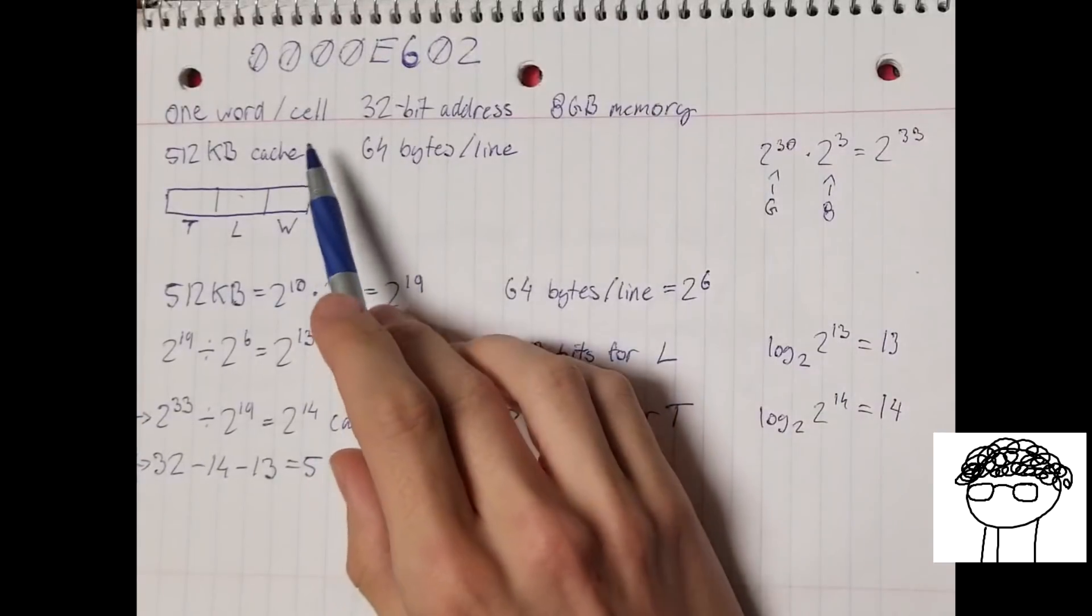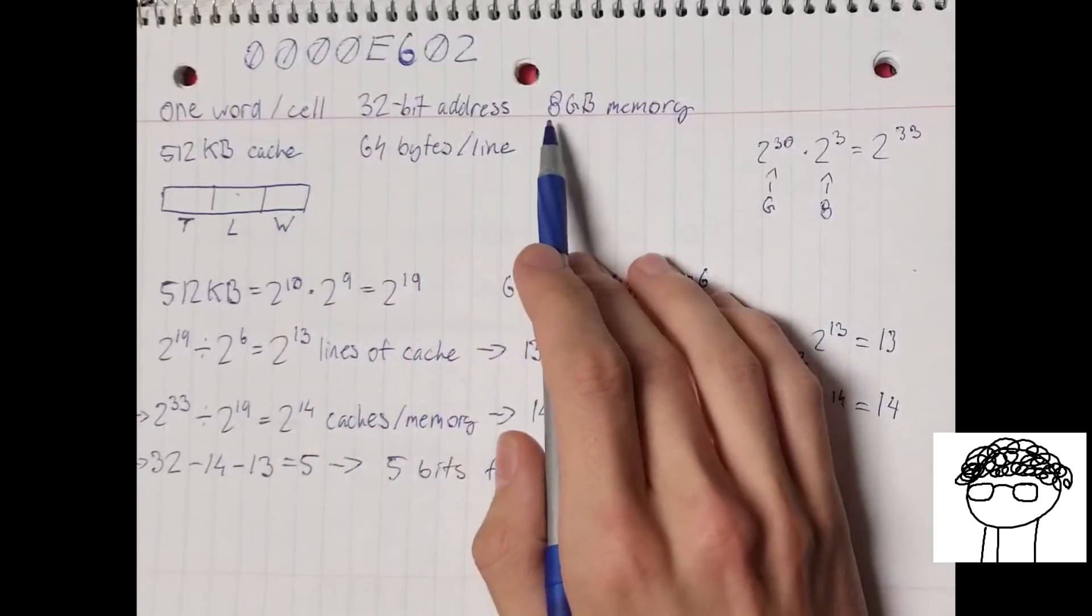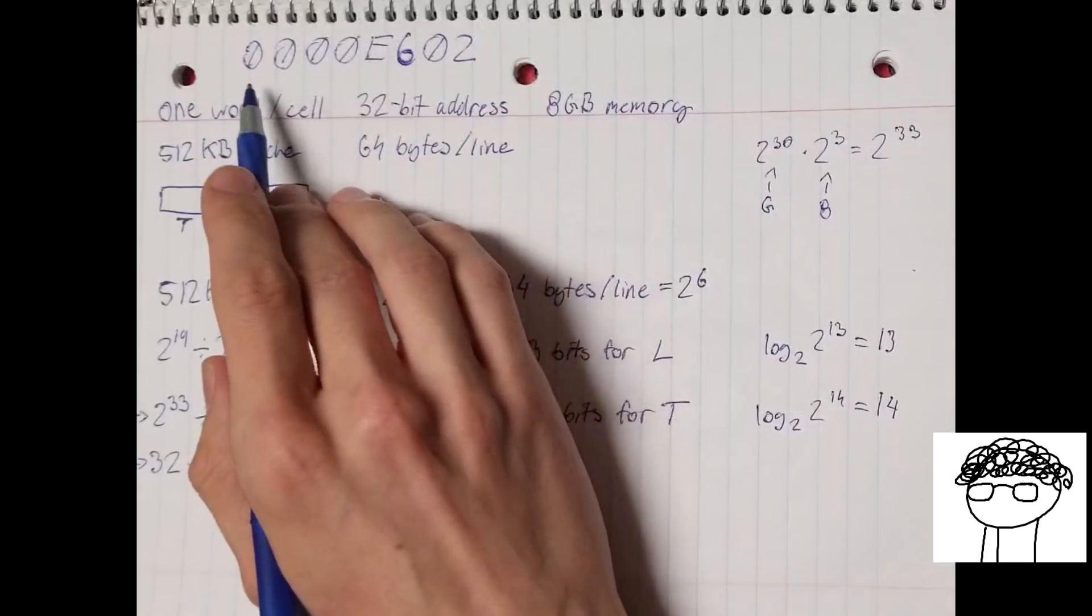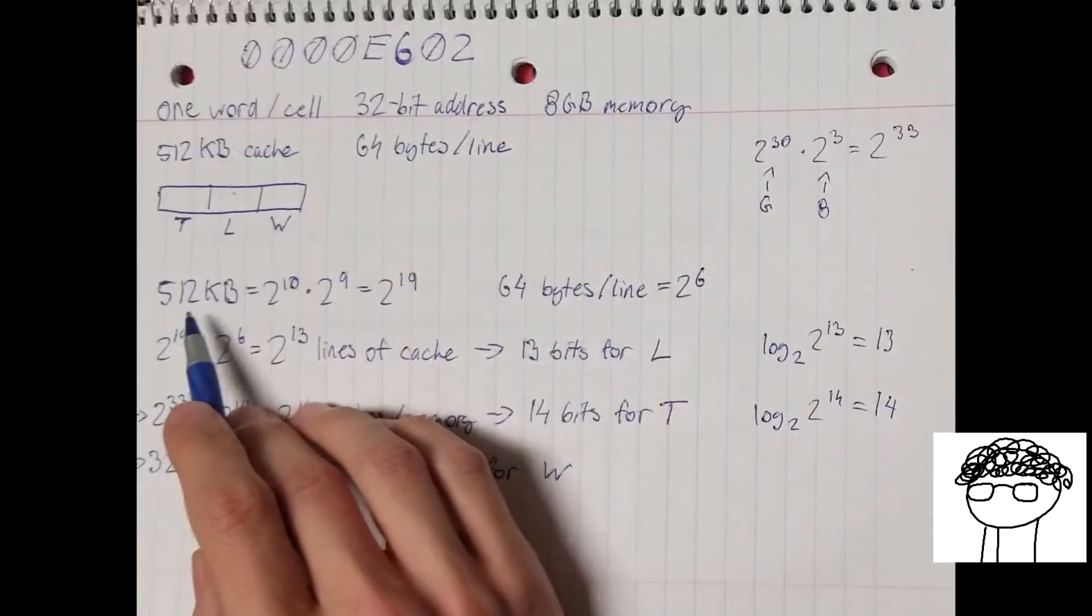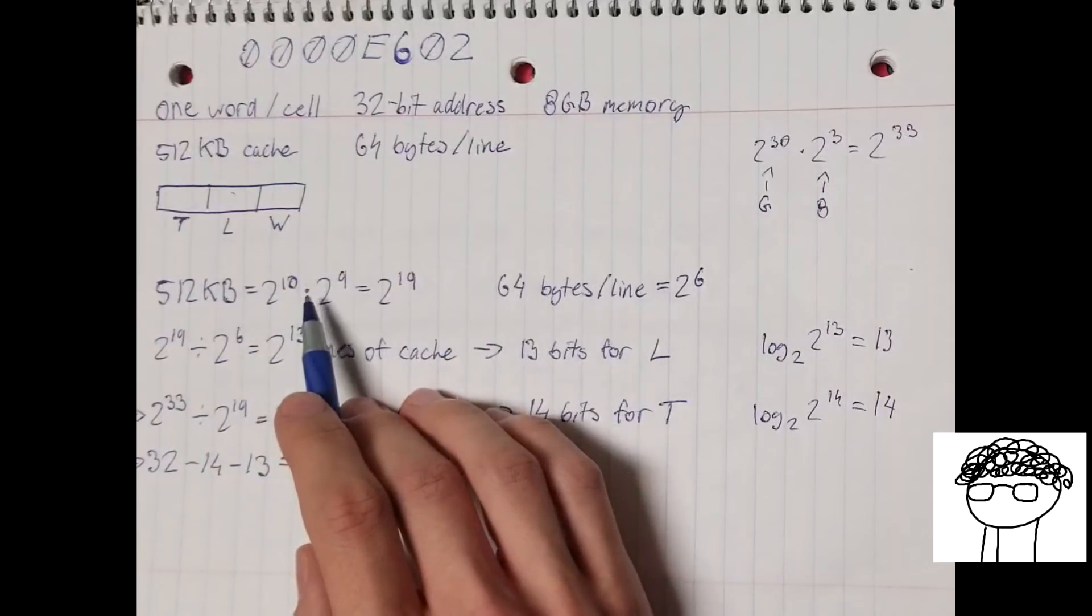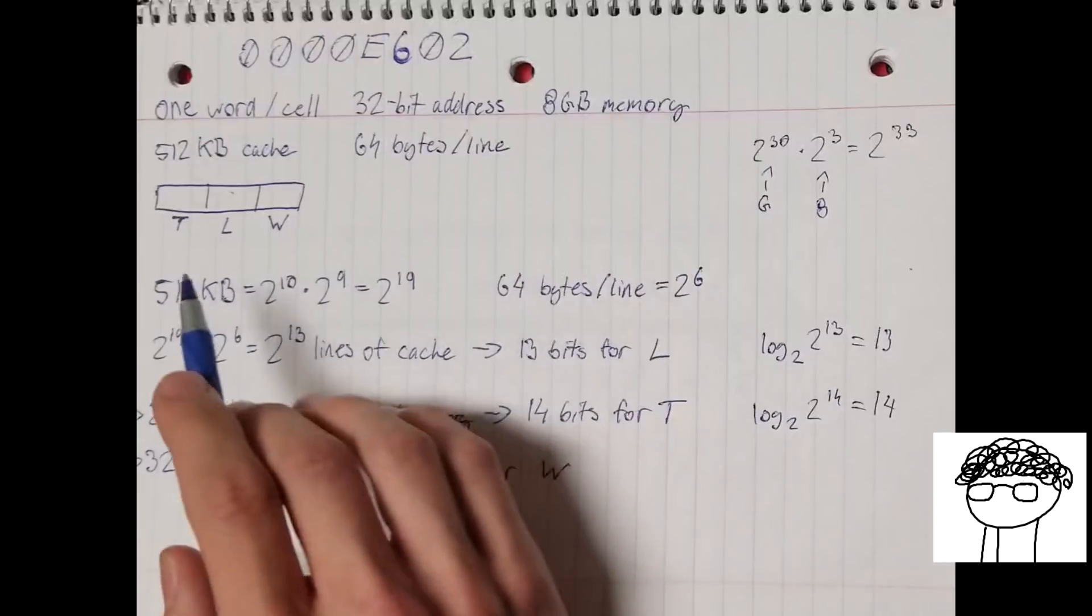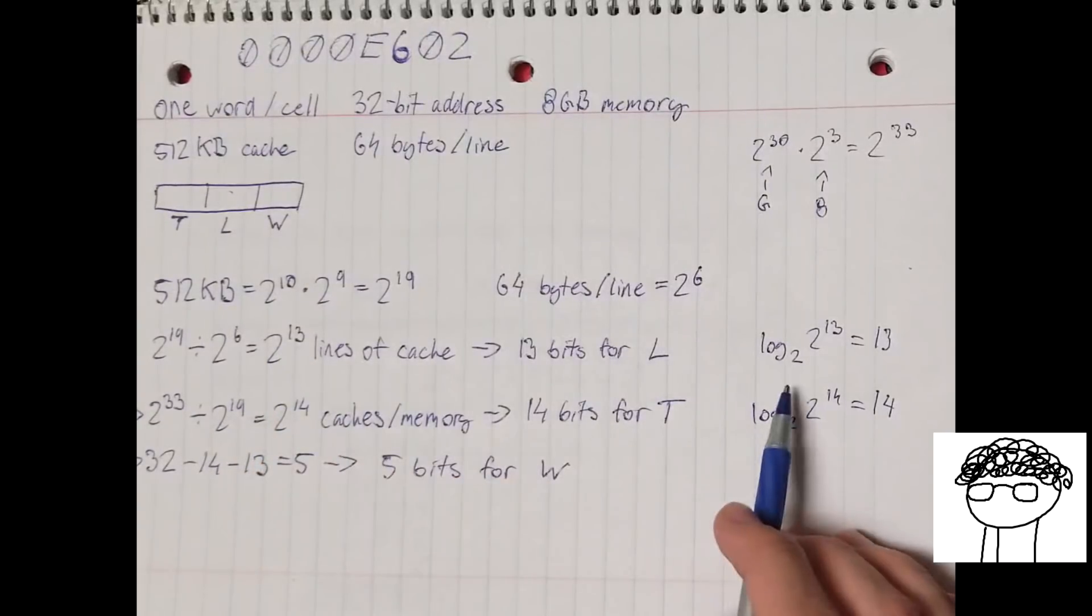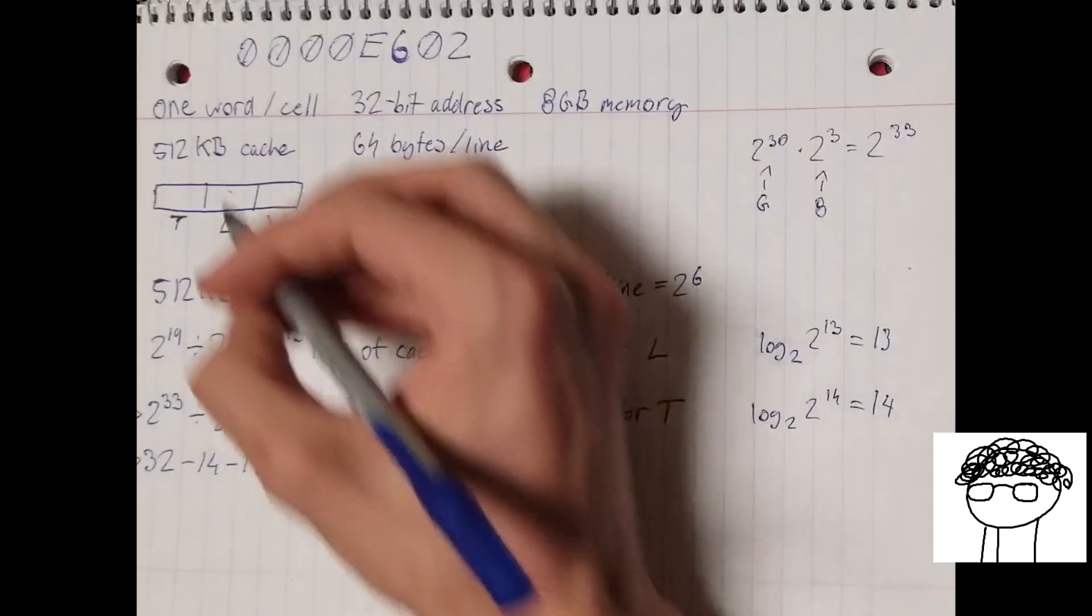Okay, so to start off, we'll look at the information that we have about our memory. We know that we have one word per cell in main memory. Each cell in main memory has a 32-bit address, and in total we have 8 gigabytes. In our cache, we have a total of 512 kilobytes, and there's 64 bytes in a line. So the address we've been given is this hex address here, so we're going to use that to answer a couple of questions. To start off, we're going to convert our total cache size into some base 2 stuff here. That'll make it a bit easier to work with. So 512 kilobytes, that's 2 to the 10 for K, times 2 to the 9 for 512, gives us 2 to the 19 bytes in our cache. The 64 bytes per line becomes 2 to the 6 for 64. I can then use those and divide my total cache size by the size of each line to get 2 to the 13 lines of cache. I can then do log base 2 of 2 to the 13, which gives me 13, and that tells me that for my line portion of the address, I have 13 bits.